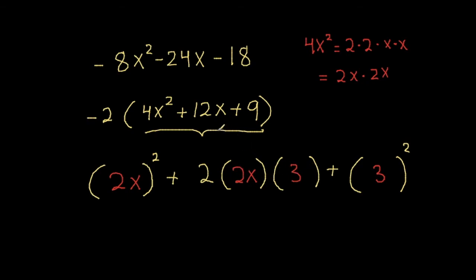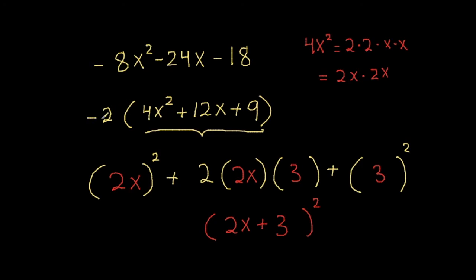The two terms inside all of those brackets are 2x and positive 3. We combine them and square the result. And don't forget there is a negative 2 out front from our earlier factorization, so the final answer is negative 2 times the quantity (2x plus 3) all squared.